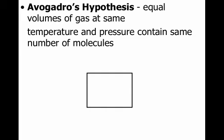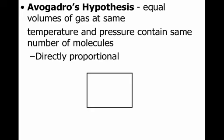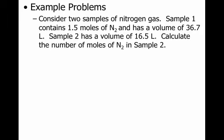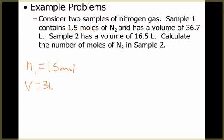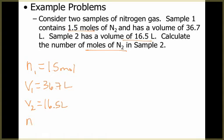The third one is Avogadro's Hypothesis — not quite a law, but we call it that. Avogadro's Hypothesis looks at volumes and moles, and says equal volumes of gas at the same temperature and pressure contain the same number of molecules. Volume and moles are directly proportional: if you increase the number of moles, you increase the volume. Here's an example: we have two samples of nitrogen. Sample 1 has N1 equals 1.5 moles and a volume of V1 equals 36.7 liters. Sample 2 has V2 equals 16.5 liters. I want to solve for N2.